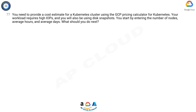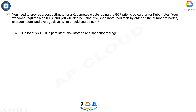You need to provide a cost estimate for a Kubernetes cluster using the GCP pricing calculator. Your workload requires high IOPs and you will also be using disk snapshots. You start by entering the number of nodes, average hours, and average days. What should you do next?